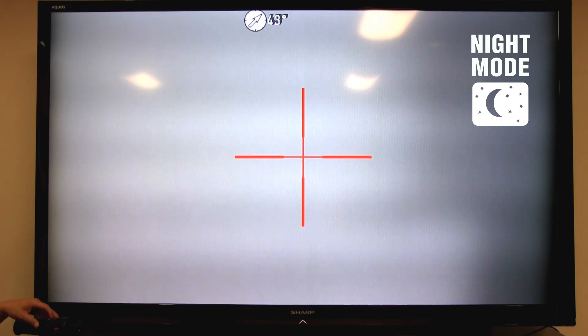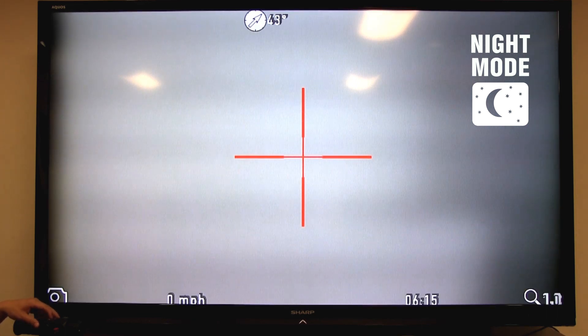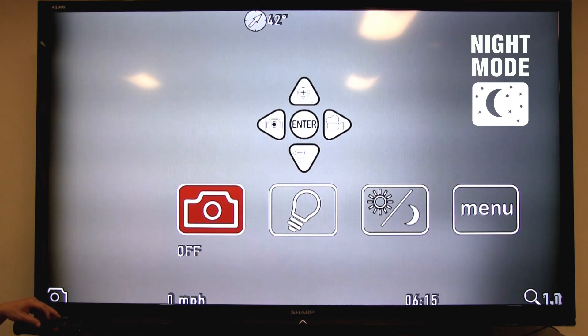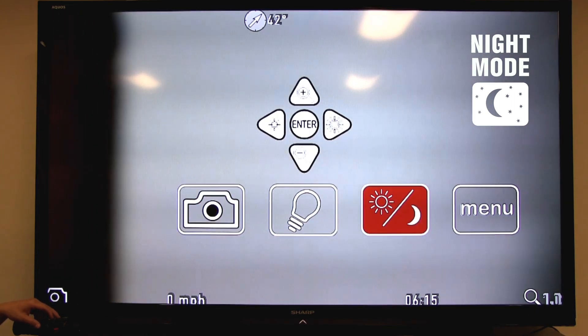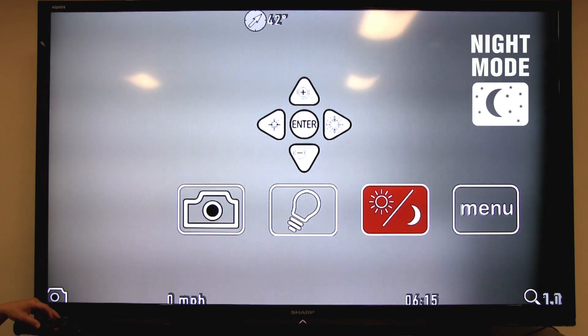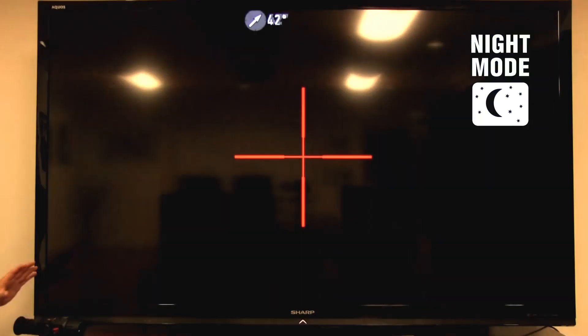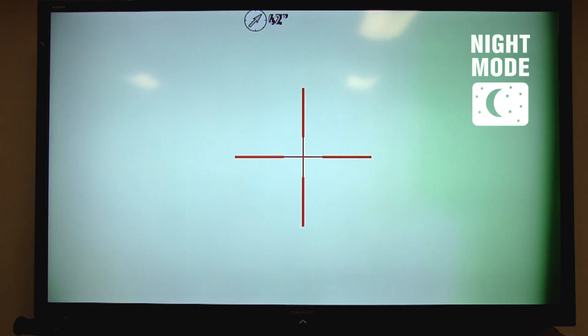To access the night mode, simply press the enter button twice to bring up your user interface, and select the sun and moon icon to activate night mode. Press enter, you'll hear a click, and you're in night mode.